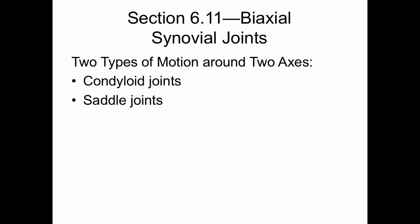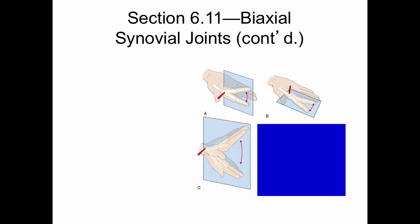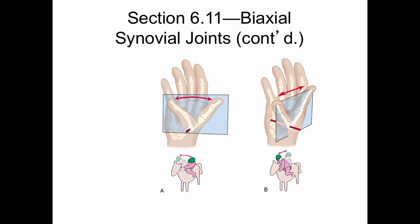Biaxial joints have two types of motion around two axes. They include condyloid joints and saddle joints. Condyloid joints are also known as ovoid or elliptical joints, and saddle joints are also known as sellar joints. In a condyloid joint, one bone is convex in shape and the other is concave — an example is the metacarpophalangeal joint of the hand. A saddle joint is a modified condyloid joint where both bones have a convexity and a concavity to their surface, similar to a person sitting on a western saddle. The thumb joint is a good example of a saddle joint.